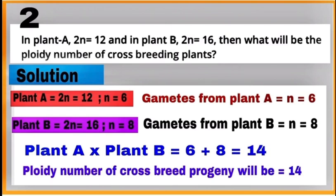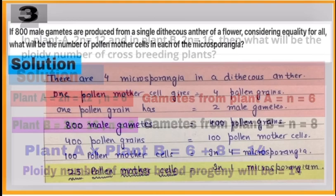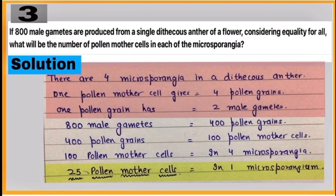Question 3: If 800 male gametes are produced in a single dithecous anther of a flower, you have to calculate the number of pollen mother cells present in each microsporangium. The answer is 25 pollen mother cells are present in one microsporangium. Carefully read all the steps to get the answer.